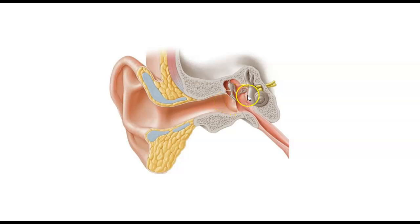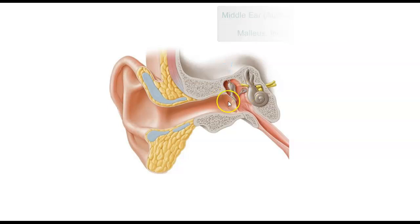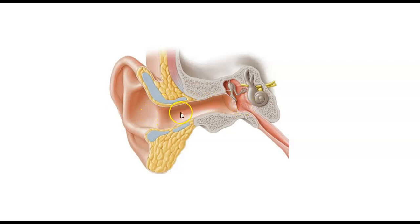The middle ear consists of the auditory ossicles: the malleus, incus, and stapes. The tympanic membrane is the divider between the outer ear and the middle ear. One has to understand the eardrum is very sensitive to sound waves and vibrates back and forth as sound waves strike it. With extra loud sound, you risk the possibility of rupturing the eardrum.